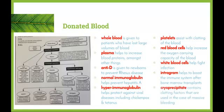Cryoprecipitate contains clotting factors that are used in the case of massive bleeding. Quite a few of these products are used when patients have lost a lot of blood in order to keep the blood volume high. If blood volume drops, organs aren't getting enough oxygen for cellular respiration to take place, and it can also play havoc with the kidneys. So maintaining blood volume is just as essential as maintaining all of these other things.